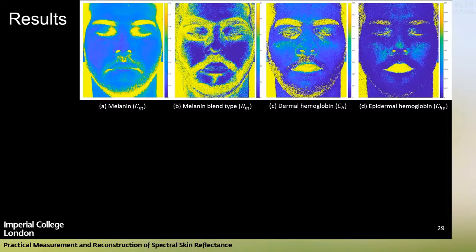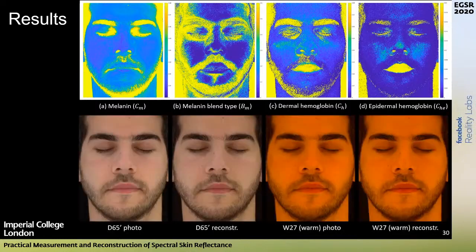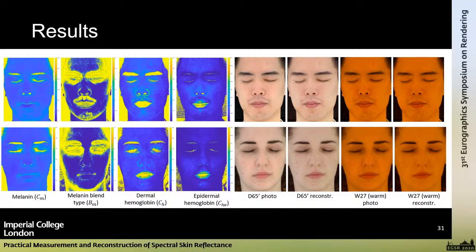With our measurement protocol, we perform a joint lookup table search: one lookup table simulated under D65 metamer illumination, and another under the synthesized blue channel. We compute best-matching color values between lookup tables and photographs in CIE LAB space, estimating four chromophore maps: melanin, melanin blend type, dermal hemoglobin, and epidermal hemoglobin. Comparison of photographs to reconstructed images under two different illumination spectra shows our method works well. Two subjects show that reconstructed appearance closely matches photographs under cooler spectrum, while the maps also predict softening and blurring of skin under warmer illumination.